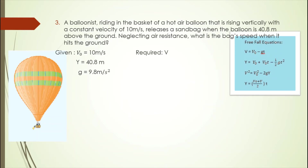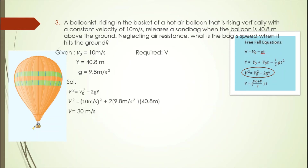We have V-O, Y, and G, and we are to solve for V. We will use equation number 3. Solution: V squared equals V-O squared minus 2GY. Substituting: initial velocity is 10 m/s squared, plus 2 times 9.8 m/s² times 40.8 meters. Simplifying and calculating, the resulting velocity of the sandbag is 30 meters per second. You may check and recalculate using your calculator to verify.